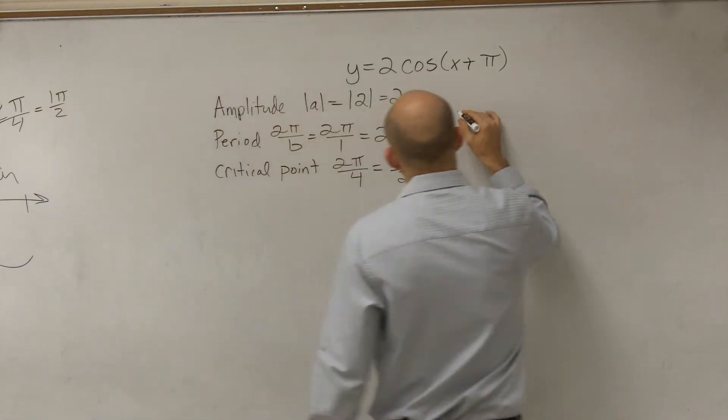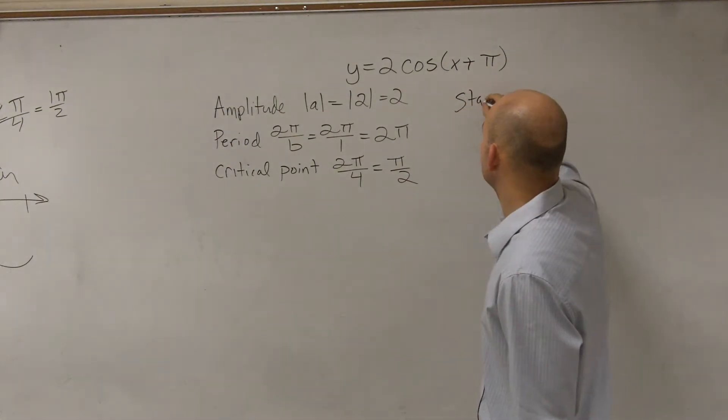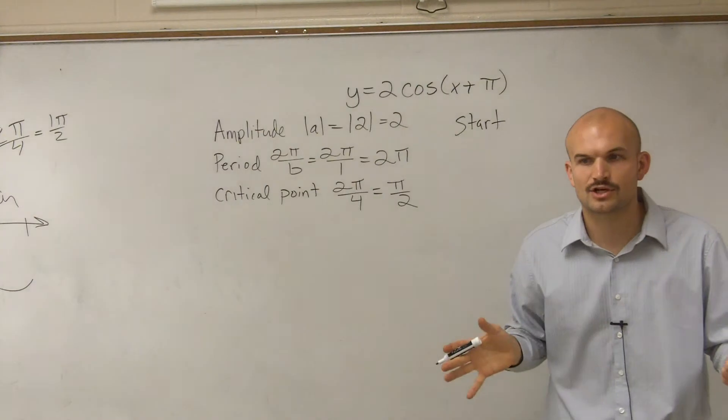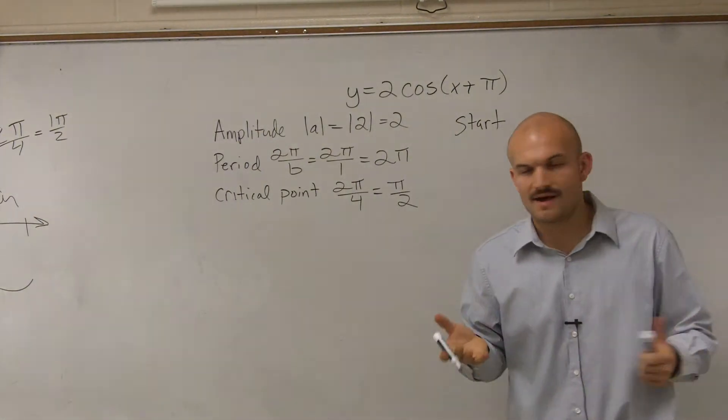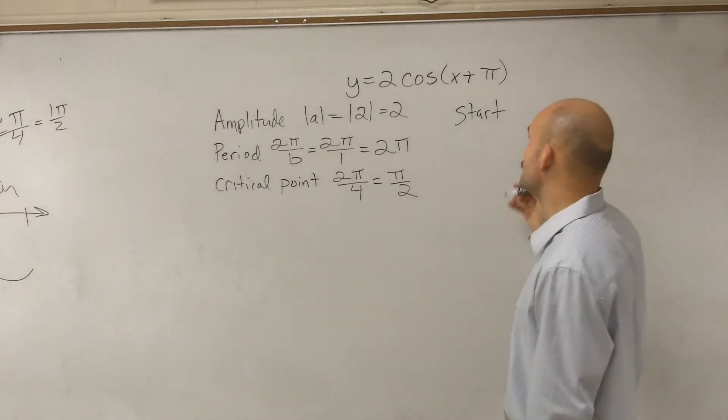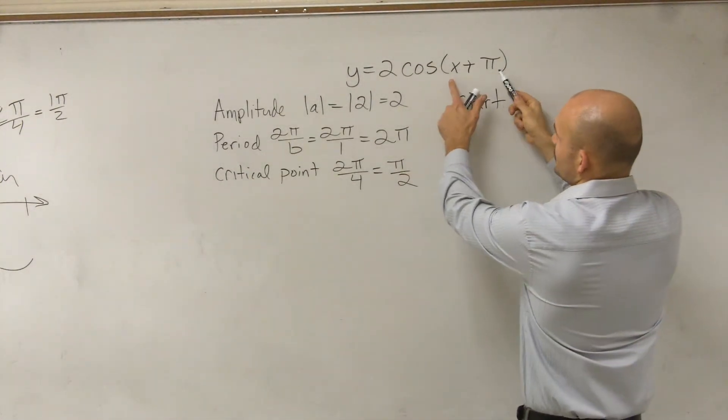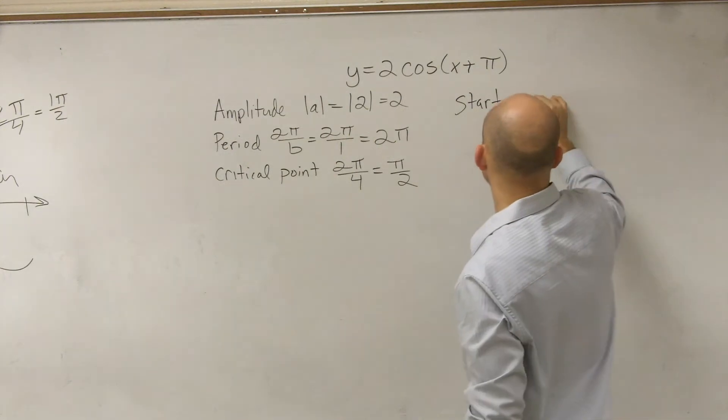Now, the next thing I like to do is take one period and see where one period is going to graph, and then you can graph the remaining periods. So when graphing one period, it's always helpful to find out the start and the end value. So to find the start, you take what's inside your function and set it equal to 0.